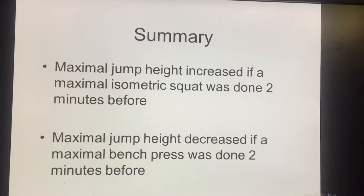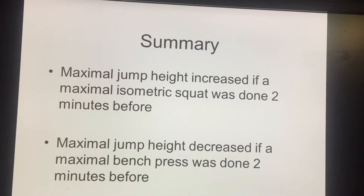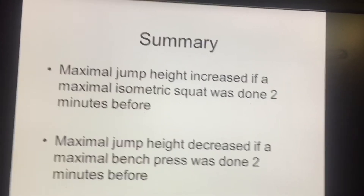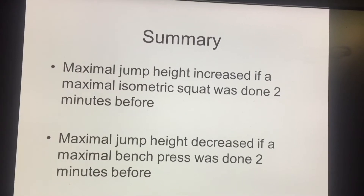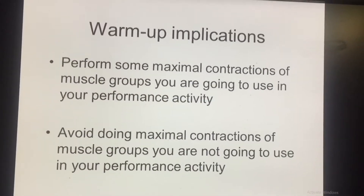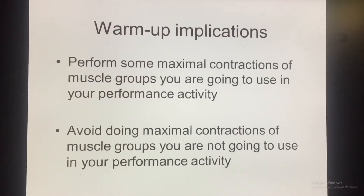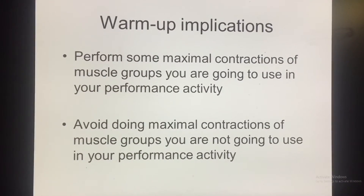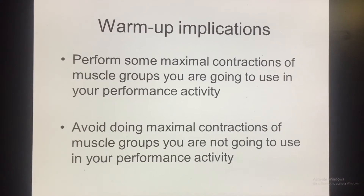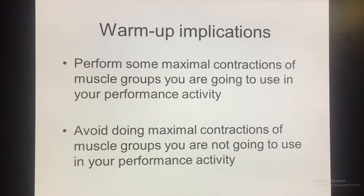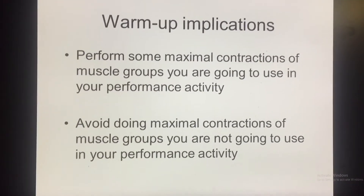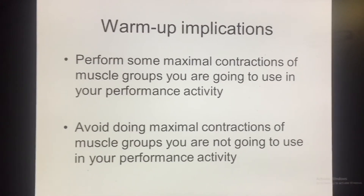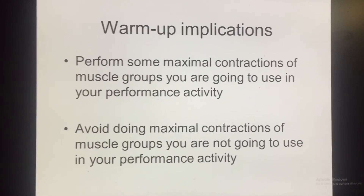We concluded that maximal vertical jump height increased if a maximal isometric squat was done two minutes before, but jump height decreased if a maximal bench press was done two minutes before. This has implications for how you might do warm-ups before a power-type sport. If you perform maximal contractions of the muscle group you're going to use in your performance activity, it will improve your performance. But you should avoid doing maximal contractions of muscle groups you are not going to use, because that is going to slightly impede your performance.